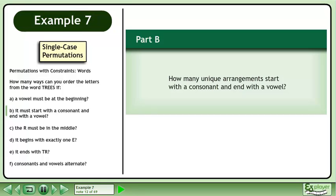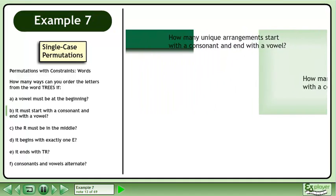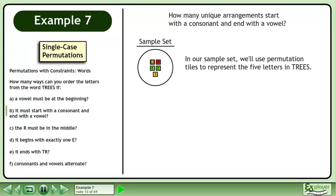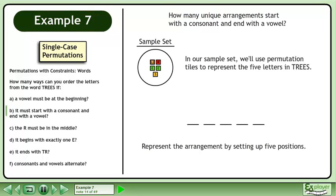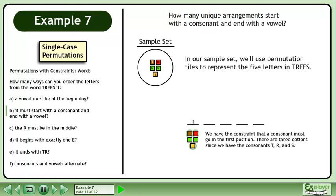In Part B, how many unique arrangements start with a consonant and end with a vowel? In our sample set, we'll use permutation tiles to represent the five letters in TREES. Represent the arrangement by setting up five positions. We have the constraint that a consonant must go in the first position. There are three options since we have the consonants T, R, and S.